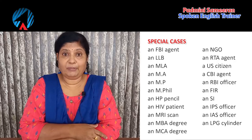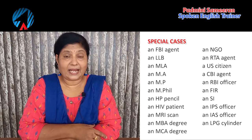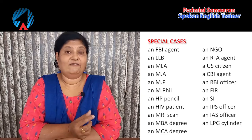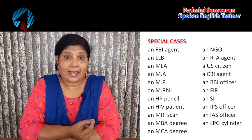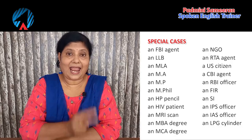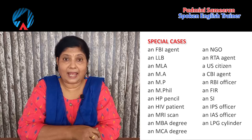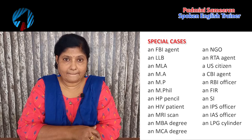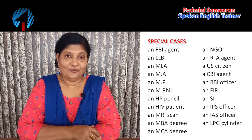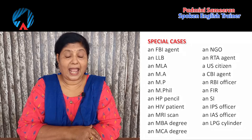Now let's look at some abbreviations. We say 'an FBI agent' because the letter 'F' begins with the vowel sound 'ef'. We say 'an LLB' because 'L' begins with the vowel sound 'el'. For MLA, 'M' begins with the vowel sound 'em', so 'an MLA', 'an MA', 'an MP'.